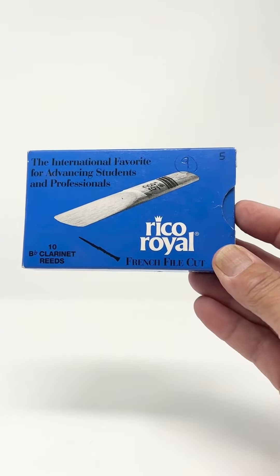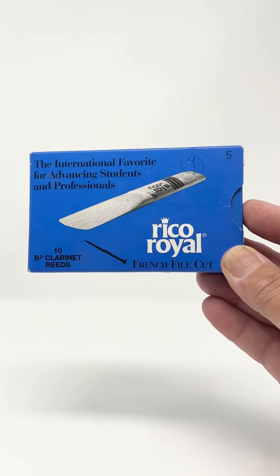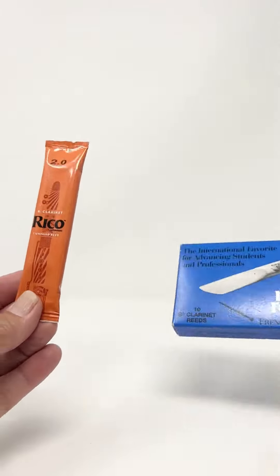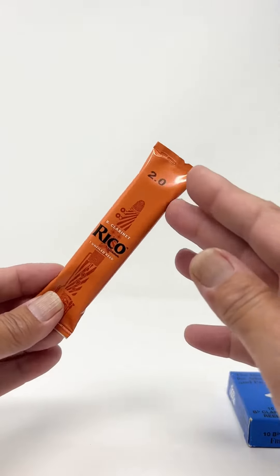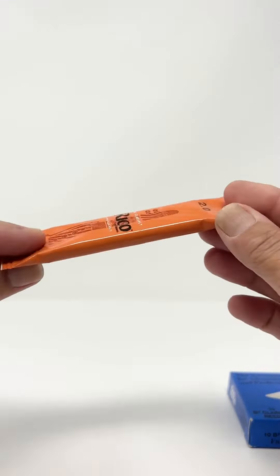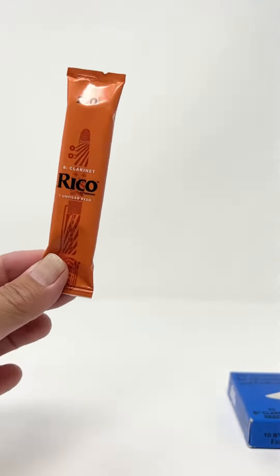People who see reeds packaged today, they're usually packaged differently. They've been changing the packaging a lot for a lot of companies. Here's the Rico regular, it's like an orange box reed, and they have it packed in these little individual things to keep each reed nice and fresh.